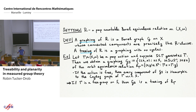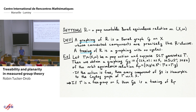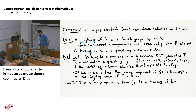After Jan's talk we're all prepared to think about measure class preserving actions and equivalence relations. Saying that R is a probability measure preserving countable Borel equivalence relation is equivalent to saying it's an orbit equivalence relation of a probability measure preserving action of some countable group.